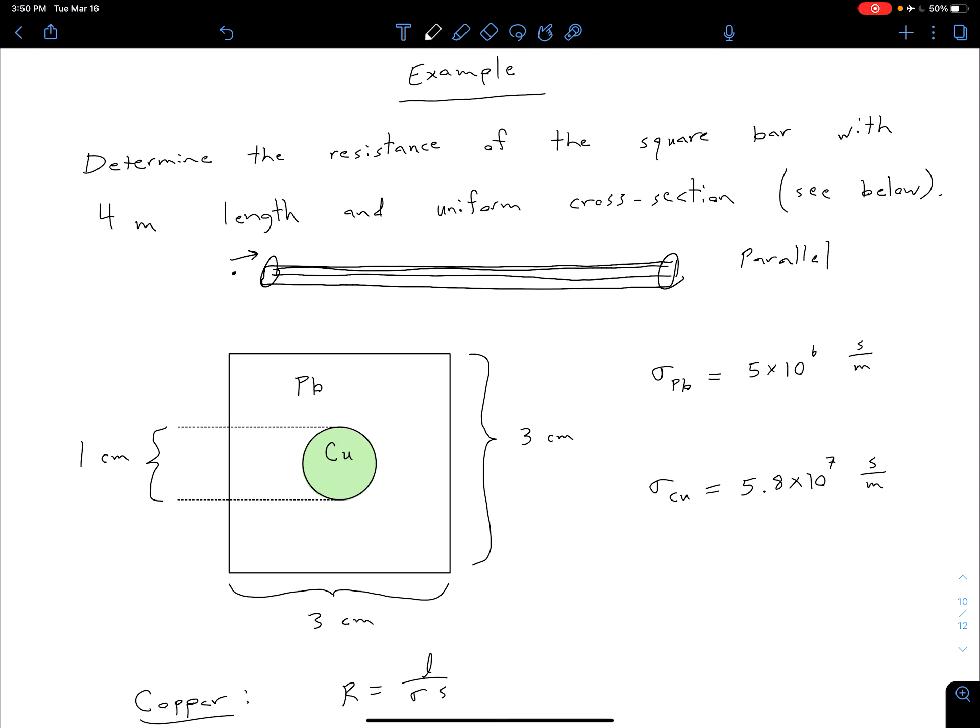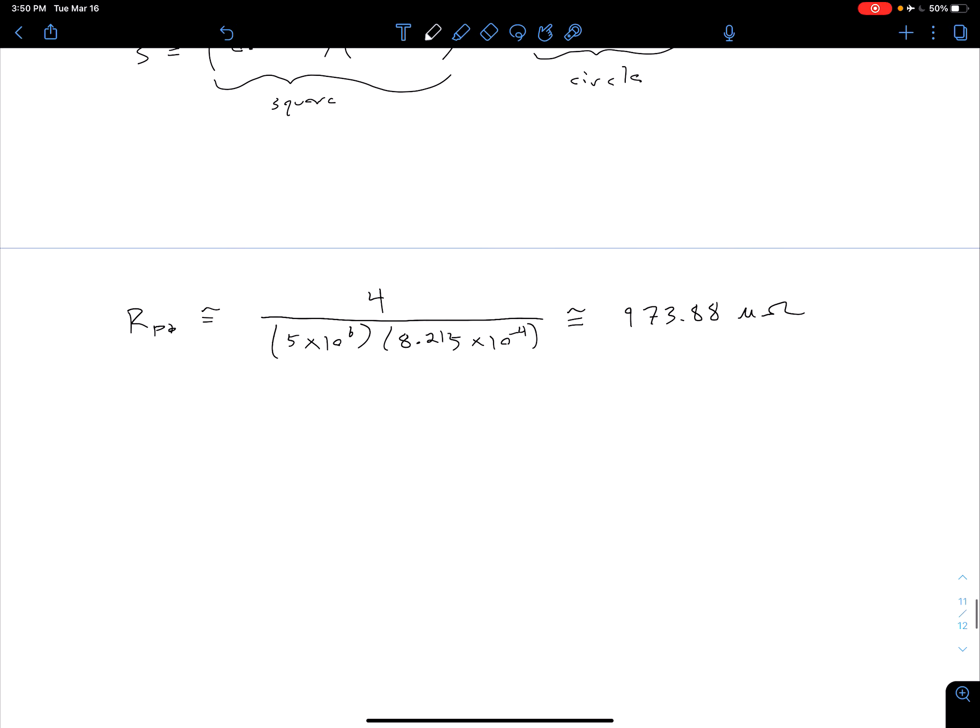Because those two paths have the same starting point and the same ending point, we can say that they're in parallel. All we're going to do here is treat these like two parallel resistors. The overall resistance of our bar, R sub BAR, is equal to the resistance of the copper segment in parallel with the resistance of our lead segment. If we plug that in, we see that this is approximately 461.75 micro-ohms. Again, very low resistance because these are metals which have very good conductivity.